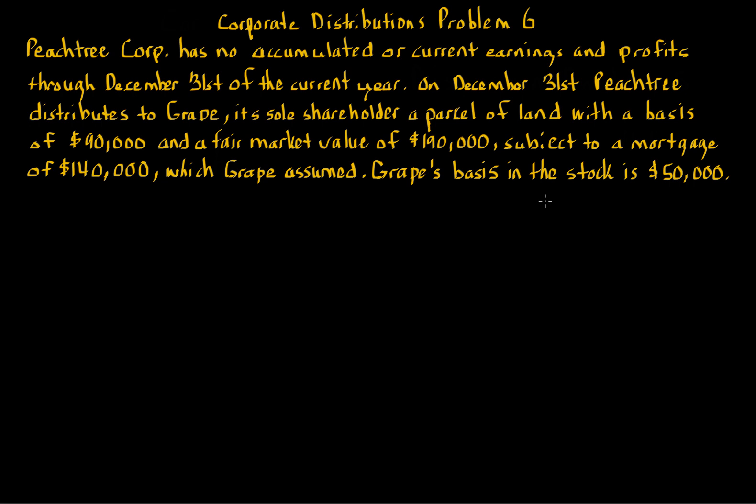Hello. In this video, we'll continue with our corporate distribution discussion and look at a problem that continues with the four steps. Step one focuses on tax consequences to the corporation distributing property. Step two adjusts the current E&P for the year. Step three looks at the consequences to the shareholder. And step four adjusts the accumulated earnings and profits so we can roll that over to next year. If you have not yet watched the previous corporate distributions problems, please do that, including the checklist video, because it's very important to understand the basic rules. This is problem six, so please see the previous problems.